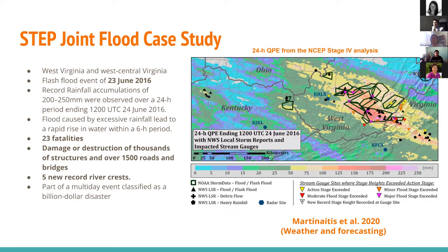Previously we worked on Colorado as a test case, but recently we agreed to work on a test case of common interest to everyone in the group. We selected the Virginia 2016 flooding event from June, when heavy rainfall exceeding 200–250 mm was recorded in a single day, producing very fast-rising, severe flooding. This resulted in 23 fatalities and damage to 1,500 roads and bridges across the state, with five new river stage records set.